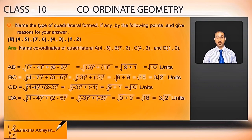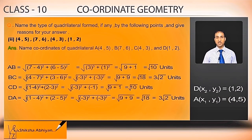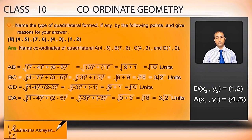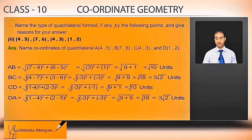Distance DA equals under root of (1 minus 4) squared plus (2 minus 5) whole square. 1 minus 4 is minus 3 squared, and 2 minus 5 is also minus 3 whole square. Minus 3 whole square is plus 9, so 9 plus 9 is root 18, equal to 3 root 2 units.